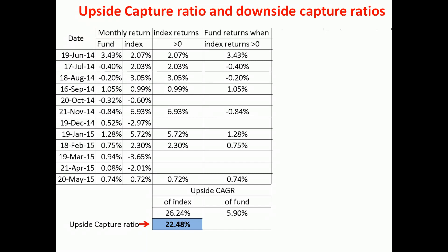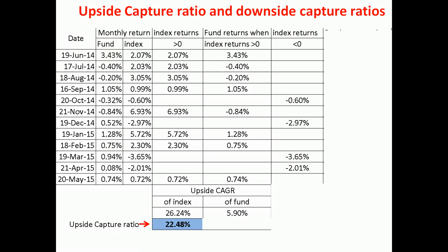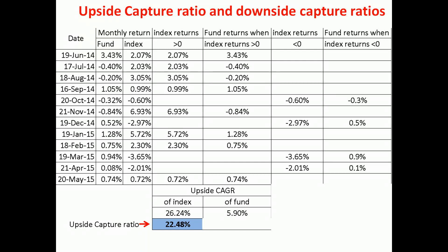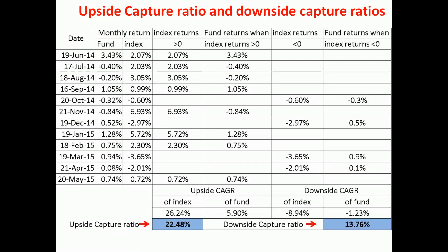Similarly, you can imagine how the downside would be calculated. We ask: when the index returns were less than 0, what were the fund returns? We then calculate the corresponding CAGRs. When the index returns were negative, that resulted in a CAGR of minus 8.94% for the index, and the corresponding CAGR of the fund is minus 1.23%. So when the index gave a negative CAGR of around minus 8%, the fund only gave a return of minus 1%, which is pretty good.